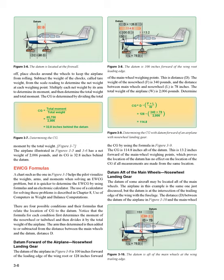Datum Forward of the Airplane — Nose Wheel Landing Gear: The datum of the airplane in figure 3-8 is 100 inches forward of the leading edge of the wing root, or 128 inches forward of the main wheel weighing points — this is distance D. The weight of the nose wheel (F) is 340 pounds, the distance between the main wheels and the nose wheel (L) is 78 inches, and the total weight of the airplane (W) is 2,006 pounds. Using the formula in figure 3-9, the CG is 114.8 inches aft of the datum — 13.2 inches forward of the main wheel weighing points — which proves the location of the datum has no effect on the location of the CG if all measurements are made from the same location.